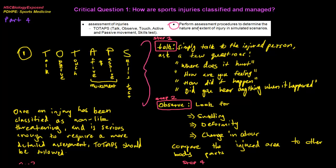Additionally, we have another dot point which asks us to perform assessment procedures to determine the nature and extent of injury in simulated scenarios. What that really means is that you need to know a few examples. You need to know when to use toe taps and how to actually use it. There is no actual content I can give you for this dot point except for providing examples and ways to tackle this syllabus dot point.